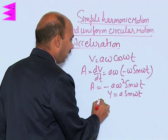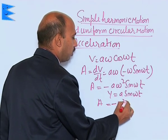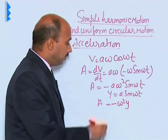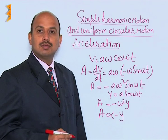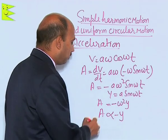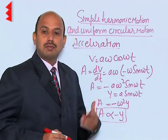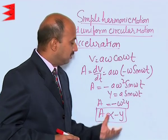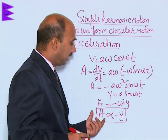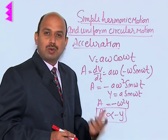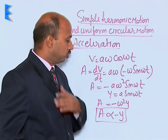So we can write A is equal to minus omega square Y. It means acceleration is directly proportional to the negative of the displacement. This is the condition for simple harmonic motion. If a body is having motion and A is directly proportional to minus Y, we can say the body is having simple harmonic motion.